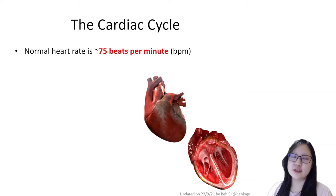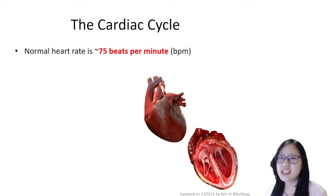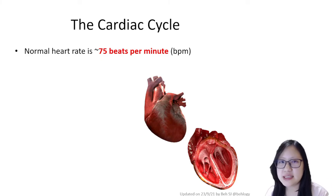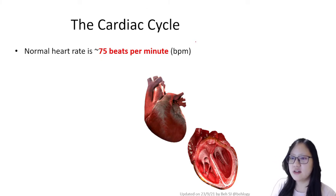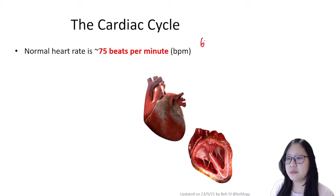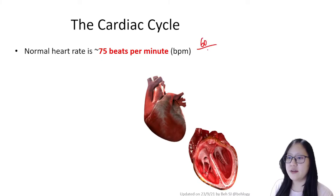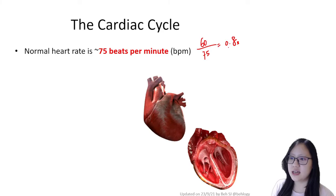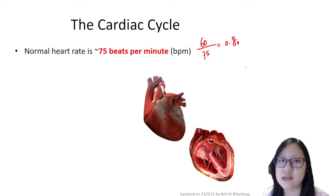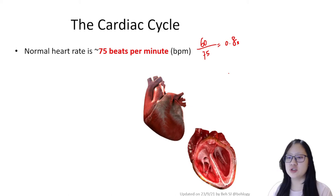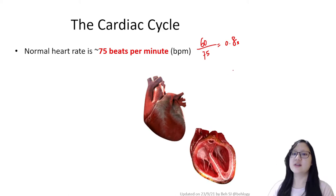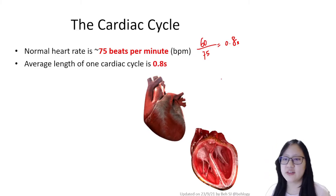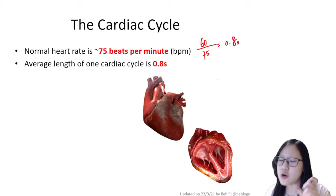Welcome to chapter 8.3b on the cardiac cycle. Our heart beats at 75 beats per minute. If you do the math: 60 seconds divided by 75 gives you 0.8 seconds. So one beat takes around 0.8 seconds, and one beat is one cardiac cycle — the average length is 0.8 seconds.